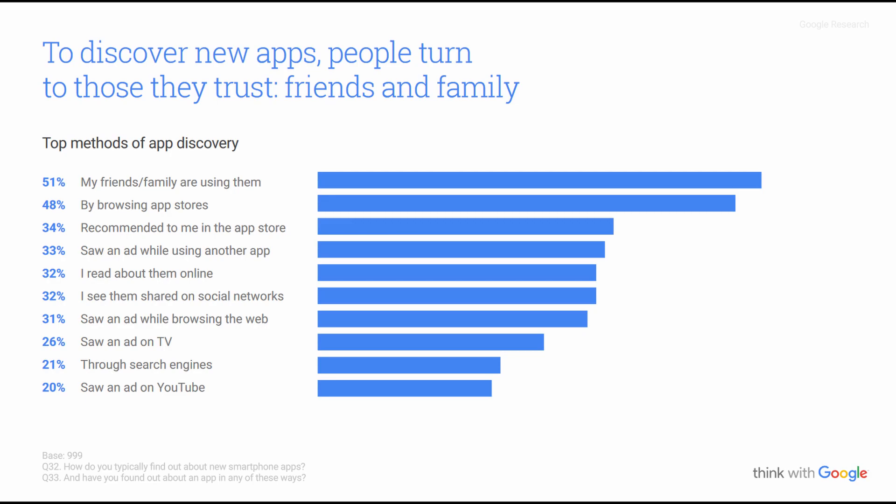Google figured out the top ways that people discover new apps. For the most part, they turn to people they trust — friends and family. After that, they find apps by just browsing app stores, followed by being recommended in the app store, seeing an ad, reading about it online, seeing it shared on social networks, seeing an ad while browsing the web, on TV, through search engines, or on YouTube. Most people are finding these apps from word of mouth or from random browsing on the app store — this is why ASO and maintaining positive reviews are so important.